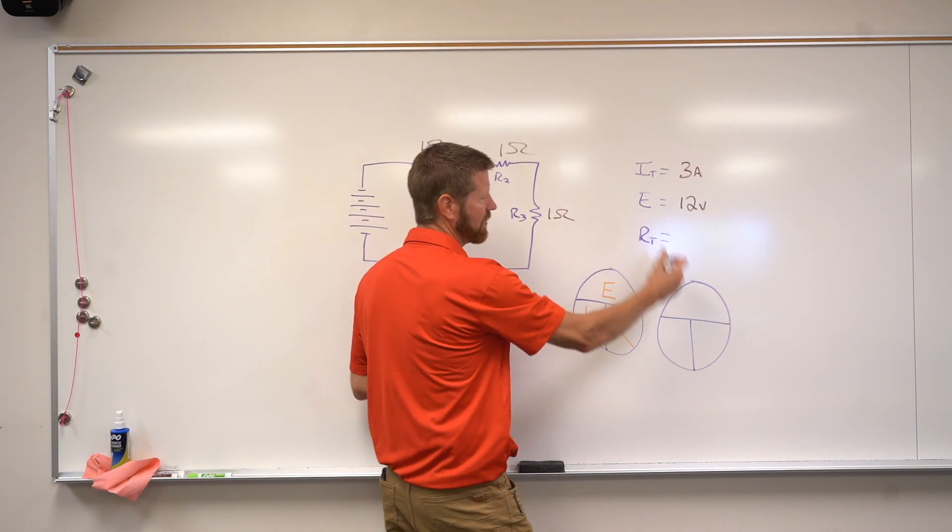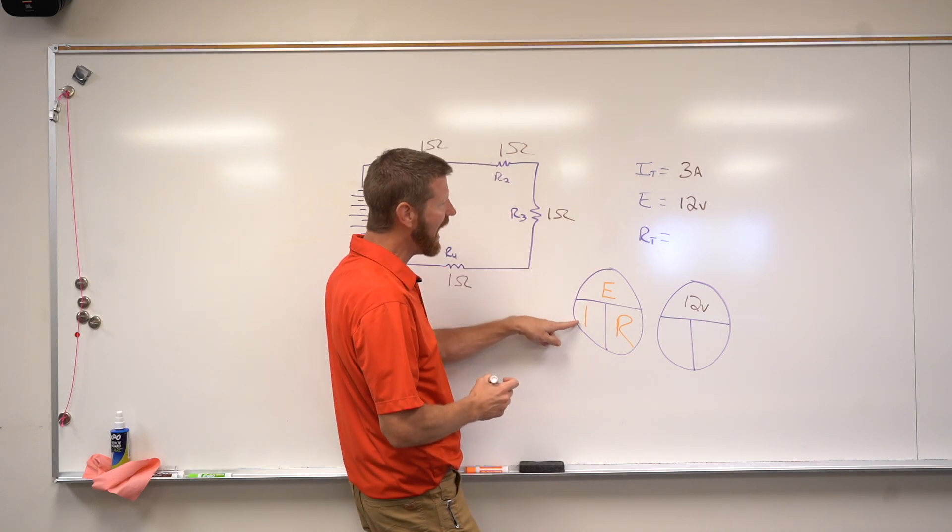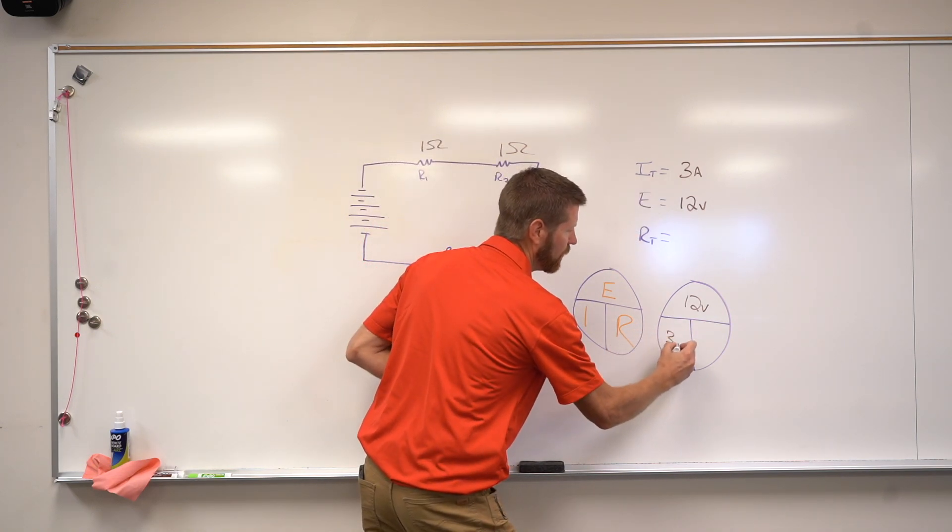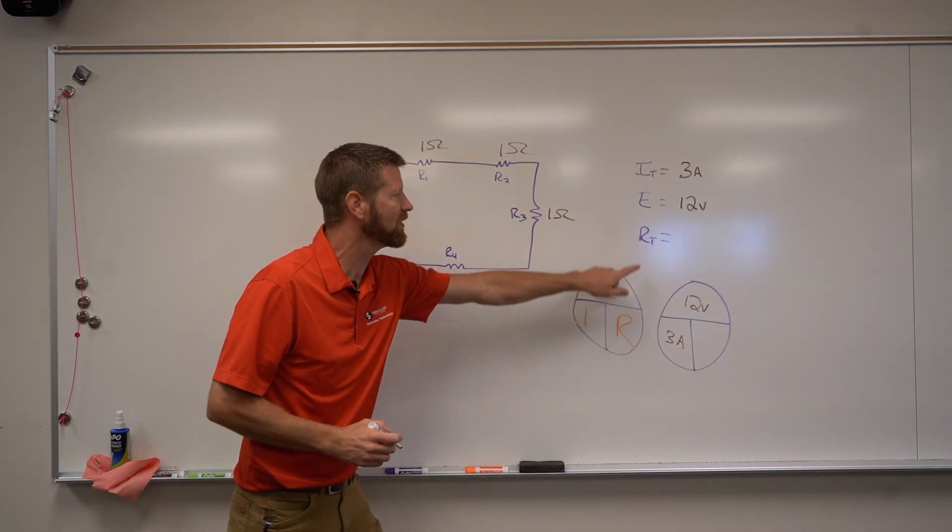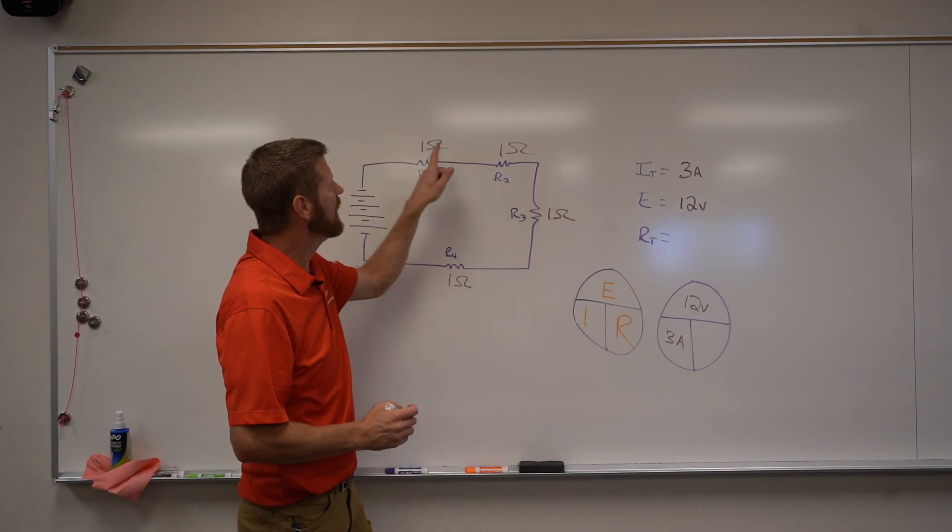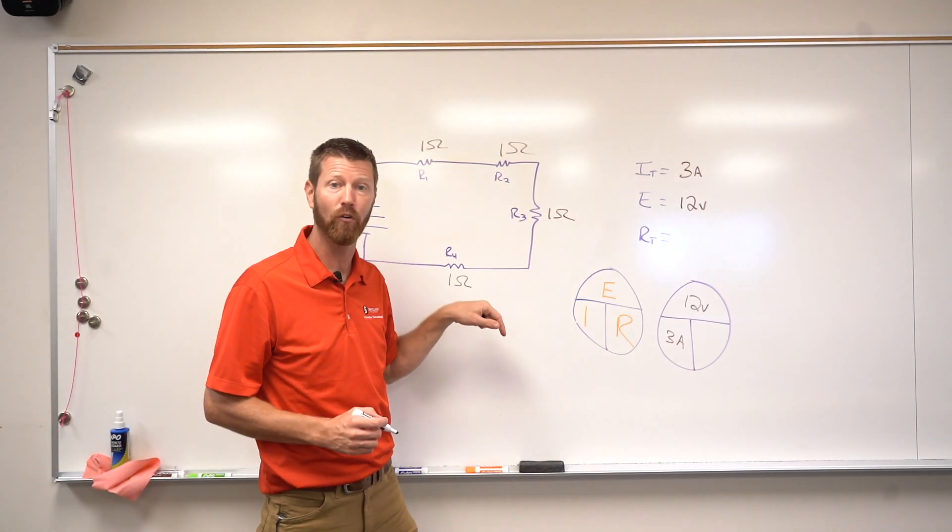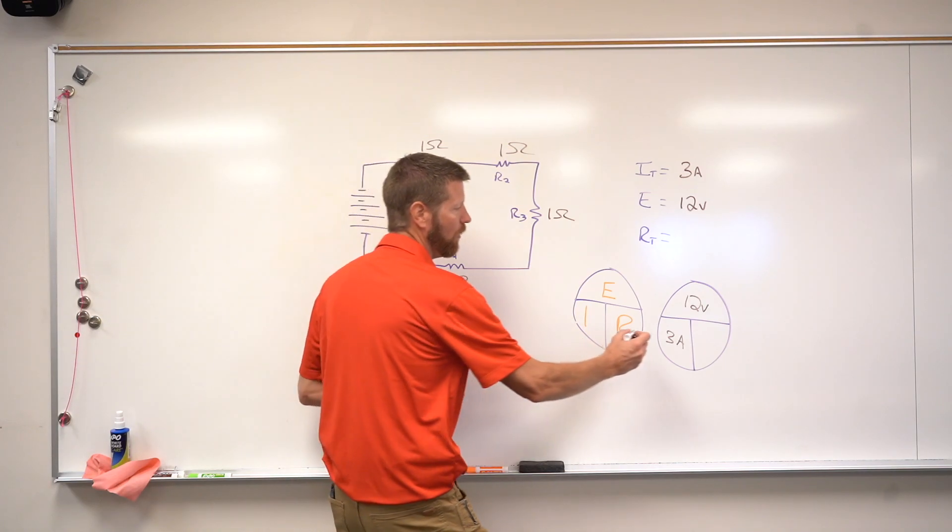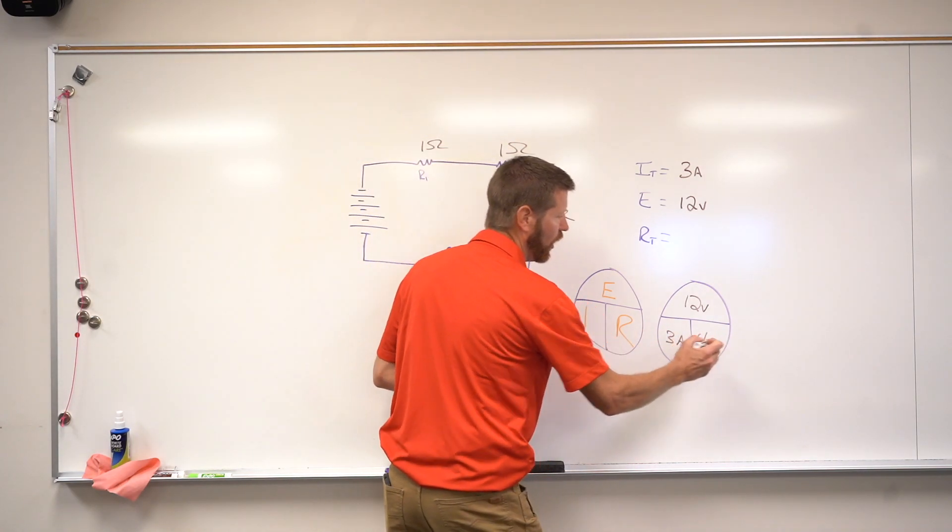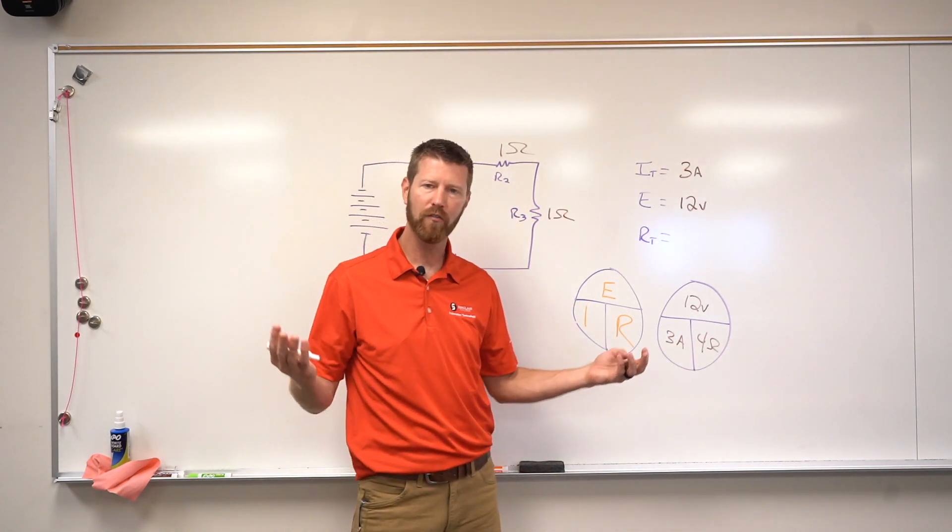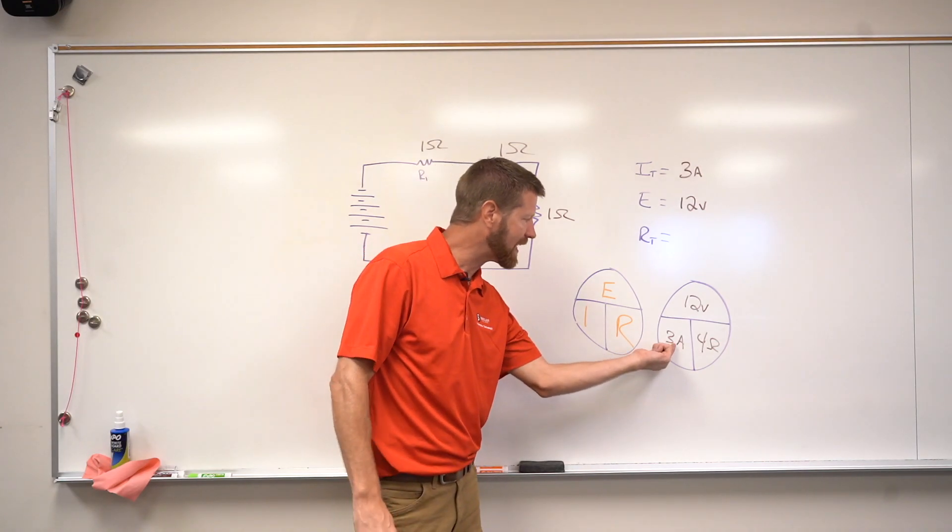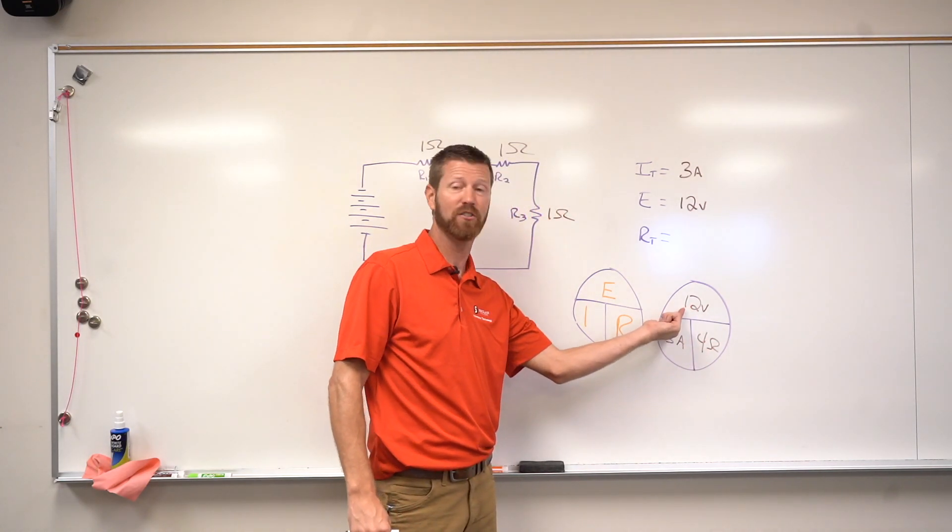So E is going to be 12 volts. We're going to put that on top. I is the intensity. We're going to put that here. And then the total resistance, the resistance total is just an addition of all four resistors. So if I add all those up, I get 4 ohms. And to go back and check ourselves, that's the cool thing about math, 3 amps times 4 ohms is 12 volts.